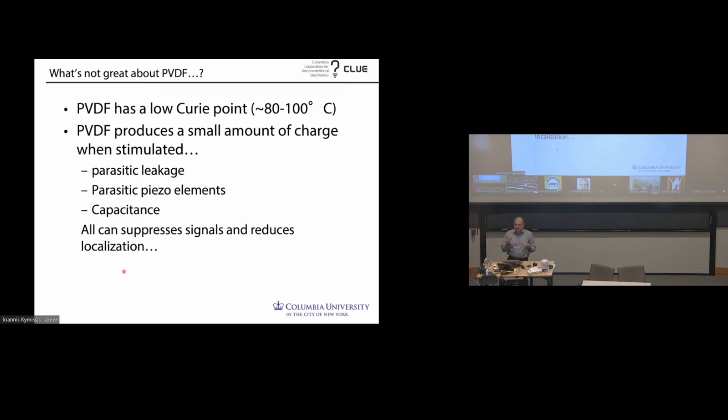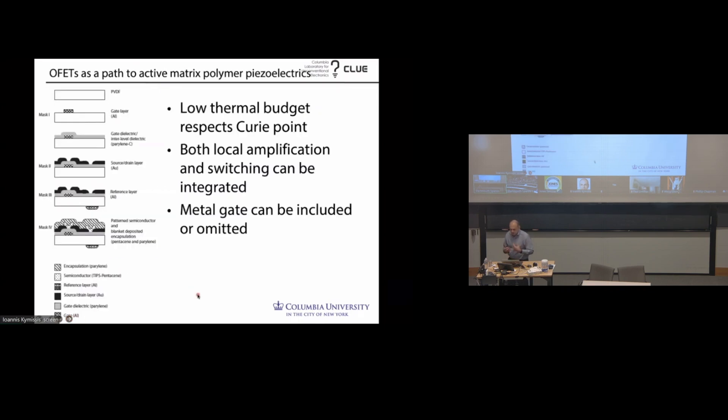But when you heat it to 80, maybe 90 degrees Celsius, it undergoes a solid phase recrystallization into the most stable phase, which unfortunately is paraelectric. And so you lose the piezoelectric character. Well below the melting point. This is not the material melting. It's really a recrystallization. So we're a little bit limited in what we can do thermally. The second issue, as I mentioned before, is that it only produces a small amount of charge when it's stimulated. And if you're making just a single sensor, that's not a big deal. But you'll see that we want to make some bigger arrays. And that means that we have to find a way to detect that small amount of charge at a distance.